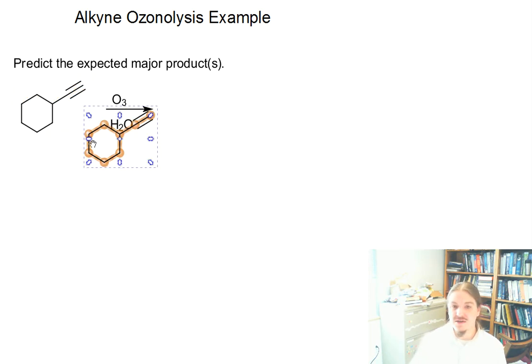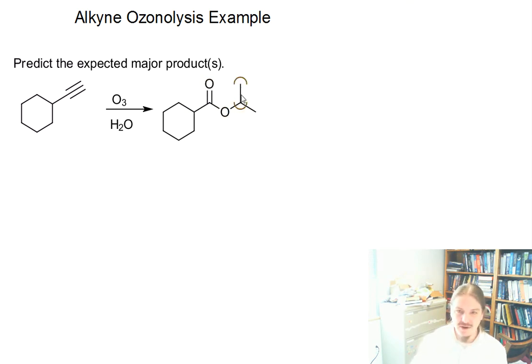First, we're doing this reaction in the presence of water, so that means we're going to get the anhydride initially. That anhydride looks like this. We just take the two alkyne carbons and it's like we erase the carbon-carbon triple bond. In fact, let me do that.